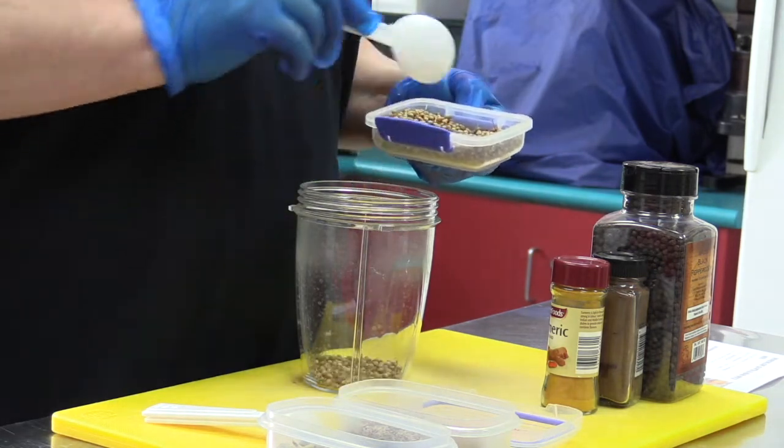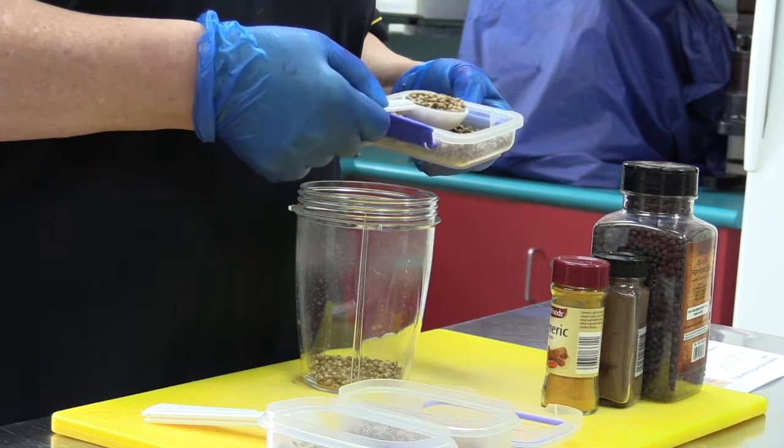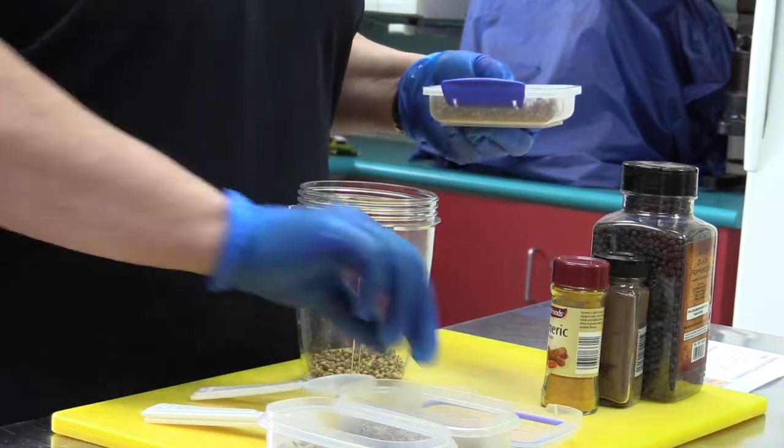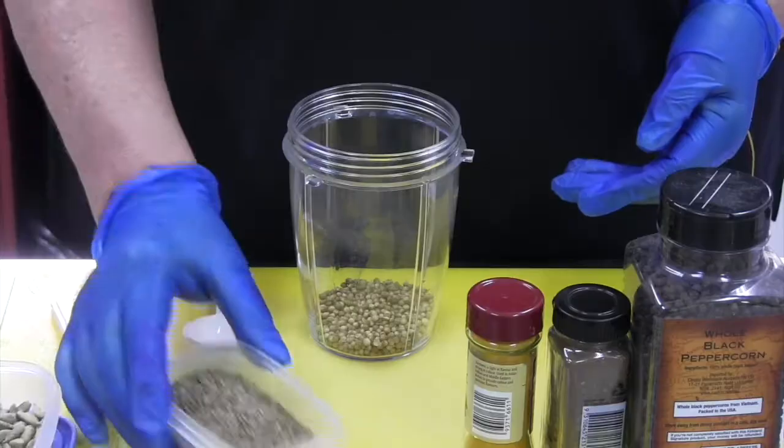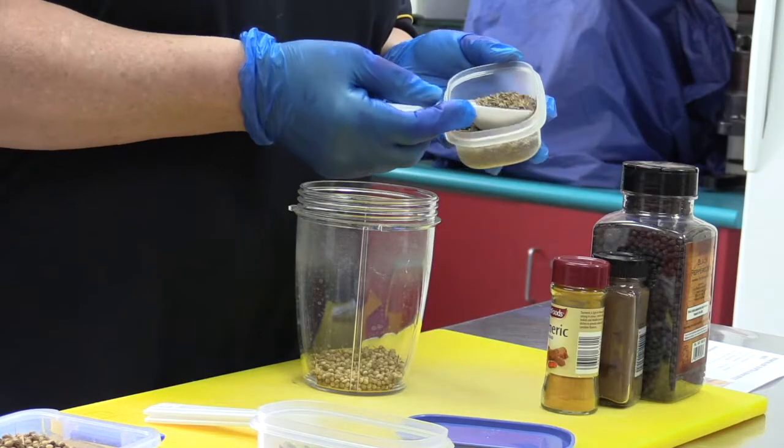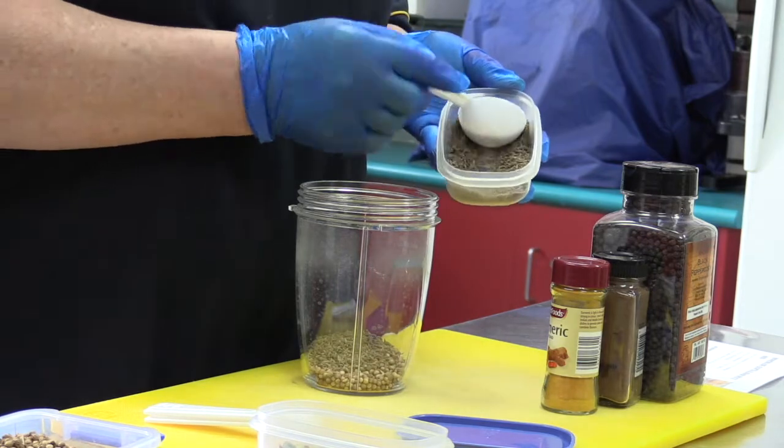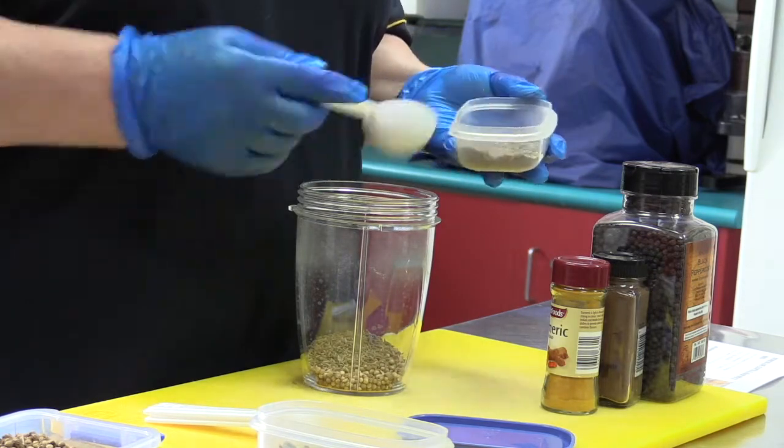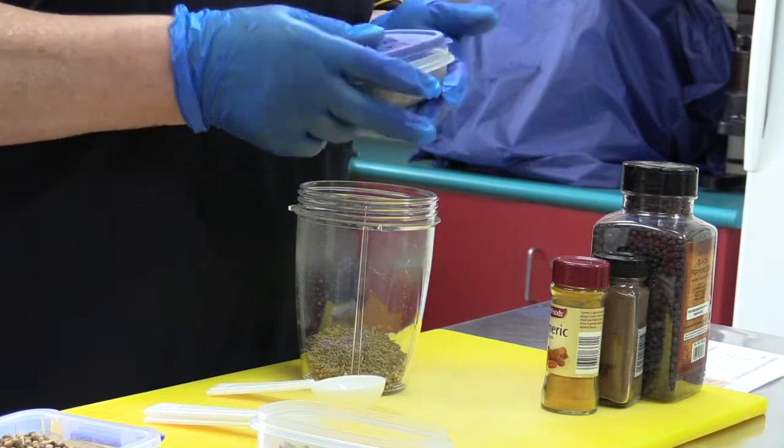First off, coriander seeds. I've got a beautiful coriander plant that's gone to seed. I'll harvest my own before long. These are cumin seeds, same amount - two tablespoons. Always keep your spices and herbs really well sealed. They do lose potency.